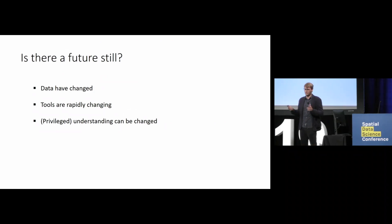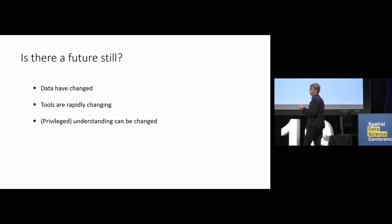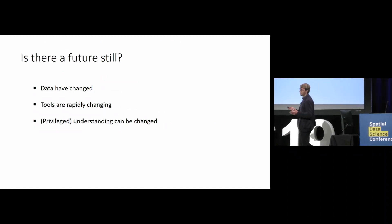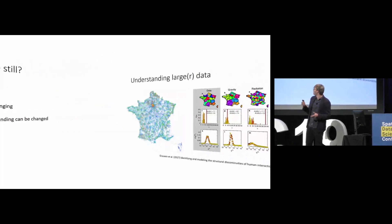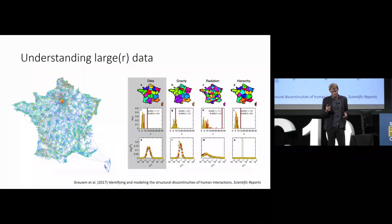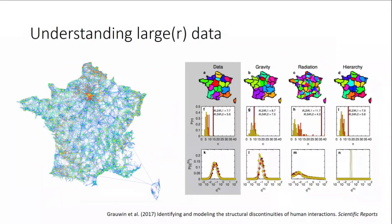I know I'm preaching a bit to the choir here, but one of the obvious things is that the data is different today. What we see is that compared to before, where these spatial interaction models would be used to fill in missing data that was not collected by surveys or census, nowadays there's this tendency towards using the spatial interaction models to understand large data sets.